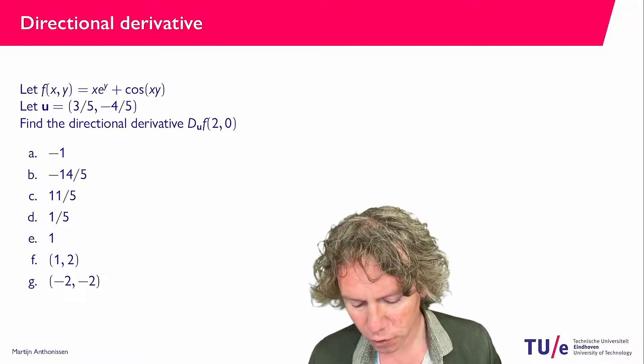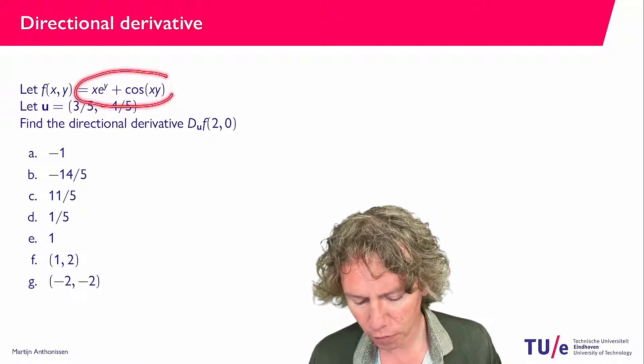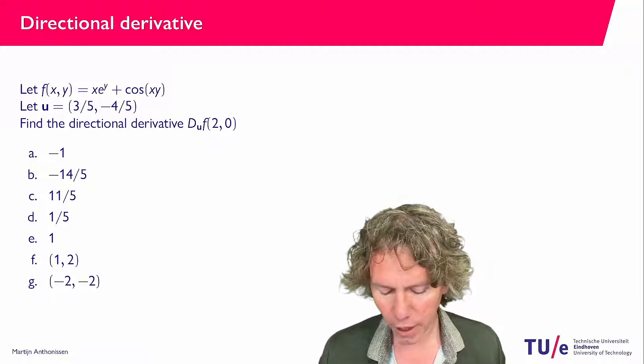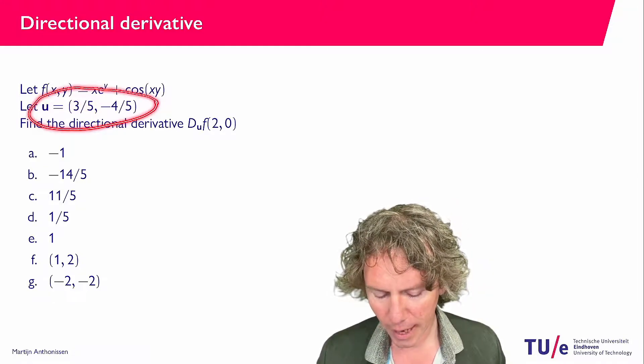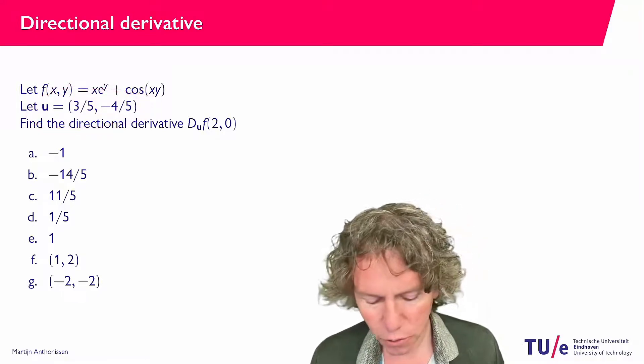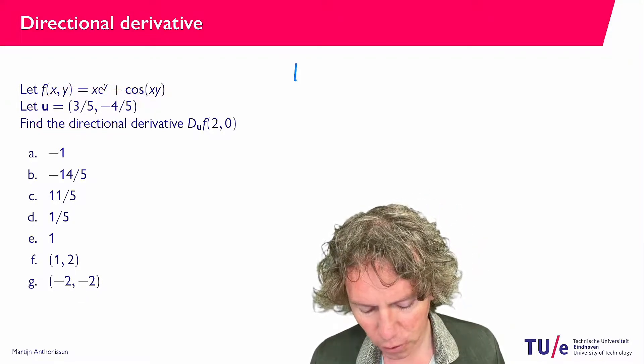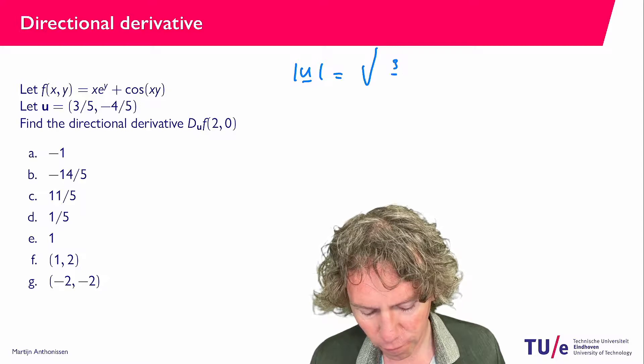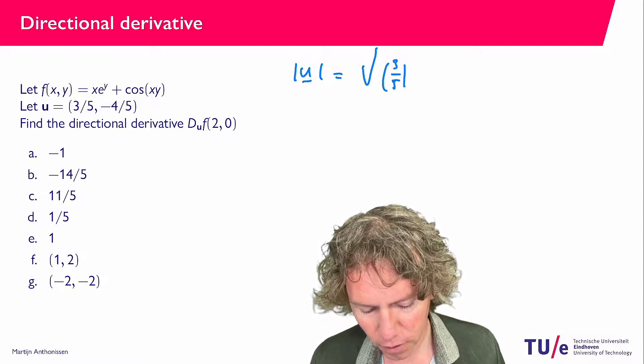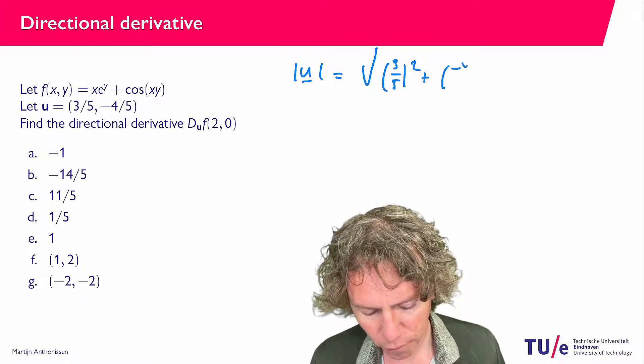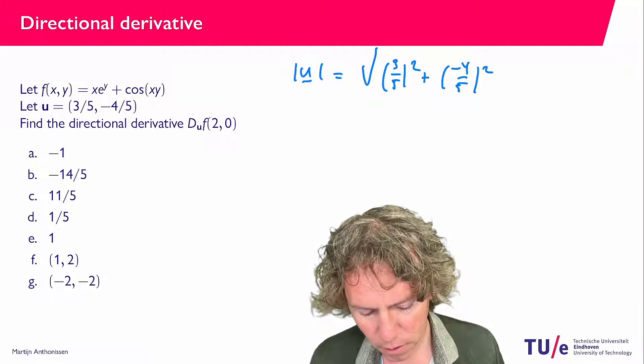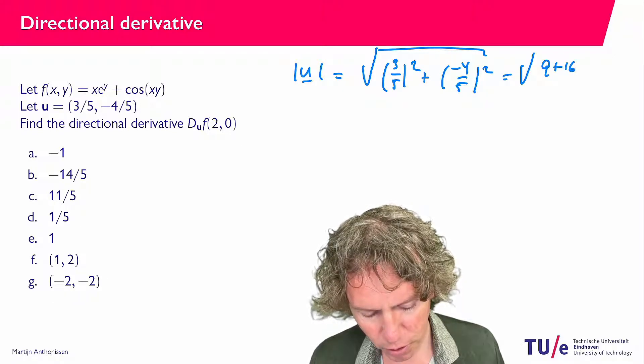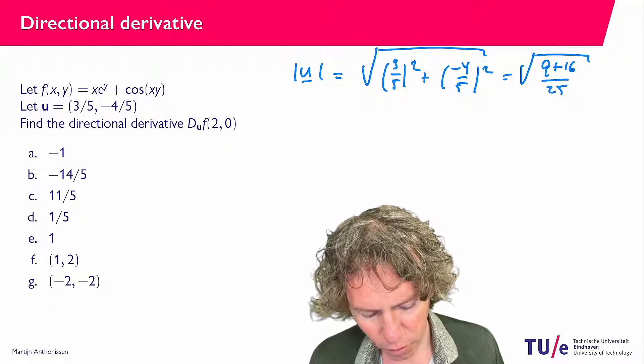We have a function of two variables x and y given by xe^y + cos(xy), and we have a vector u. It is easy to see that u has length 1 because if we compute the length of this vector, we get the square root of (3/5)² + (-4/5)², which is the square root of (9 + 16)/25, which equals 1.